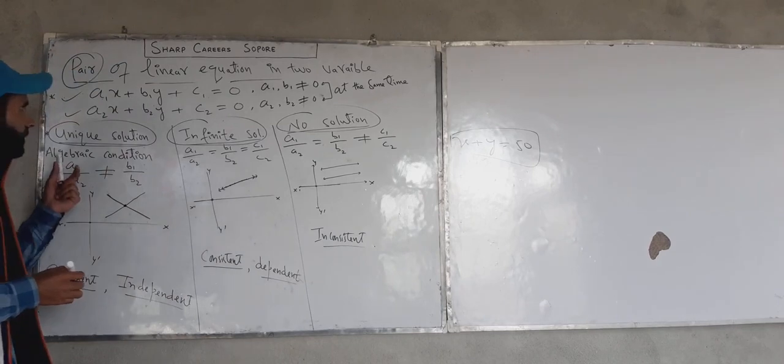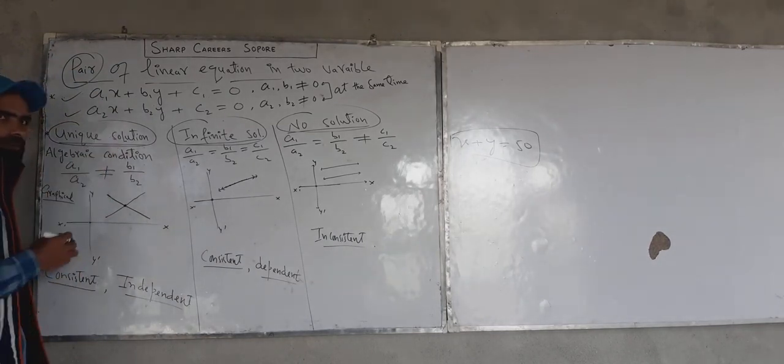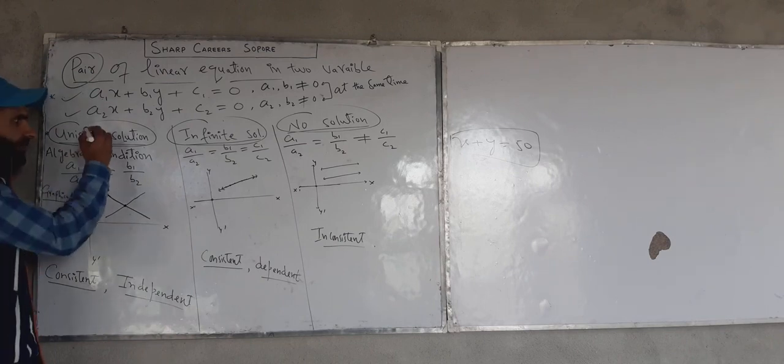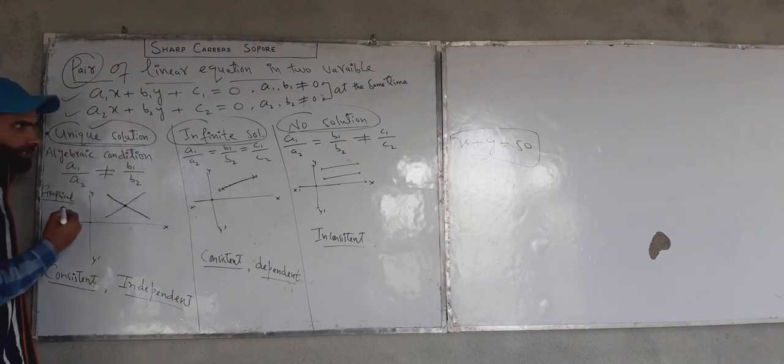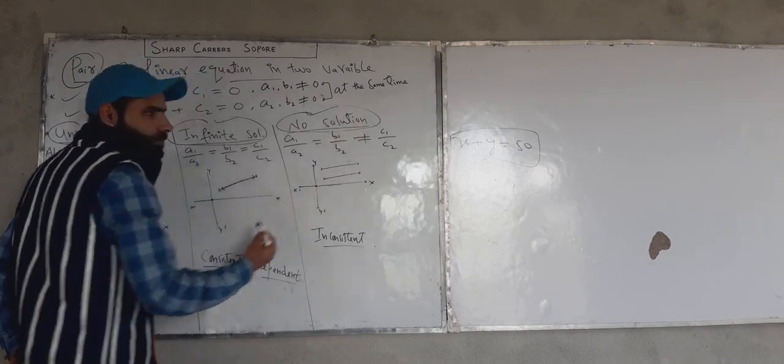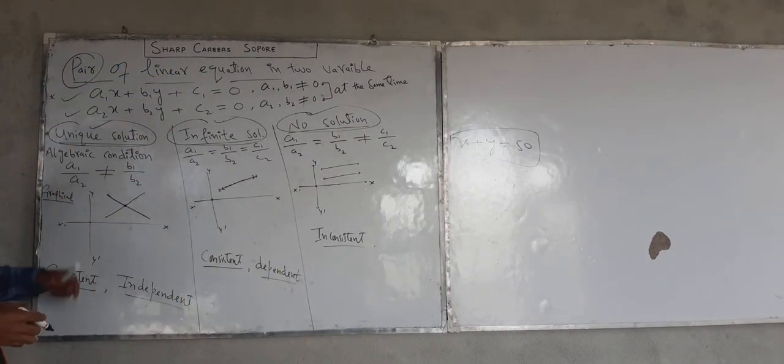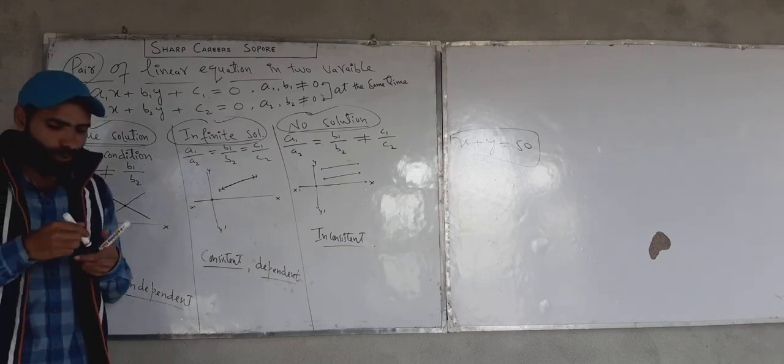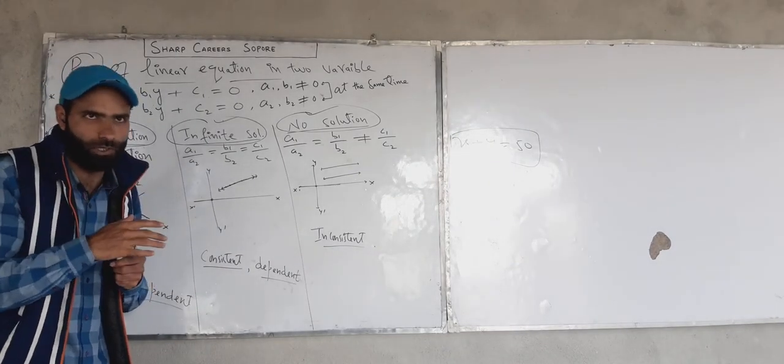So here we are given two pieces of information. These two pieces of information, they may have unique solution, they may have infinite solution, they may have no solution. Why? Because when we check these two informations.